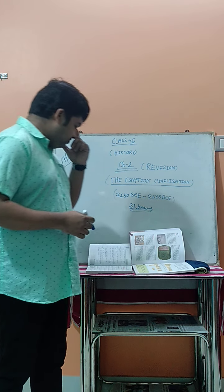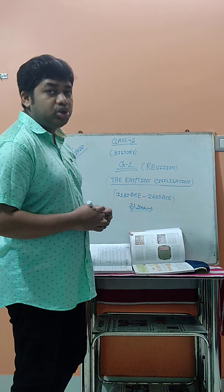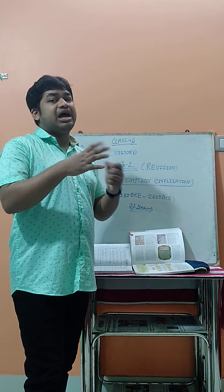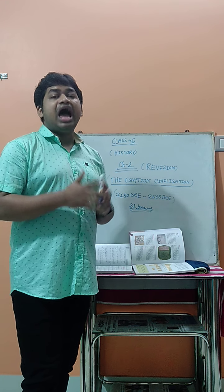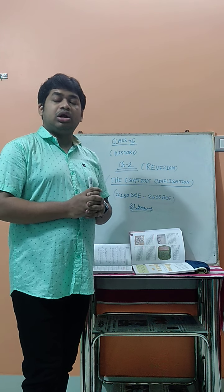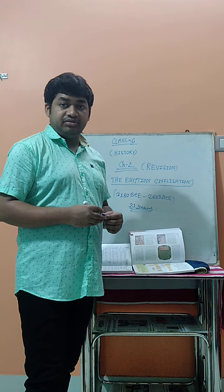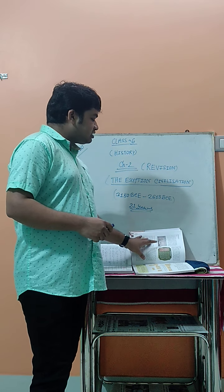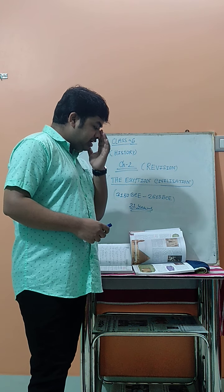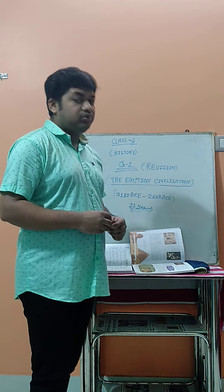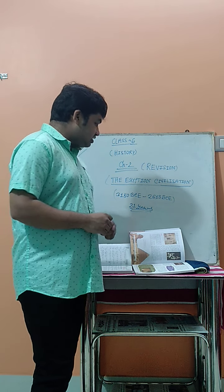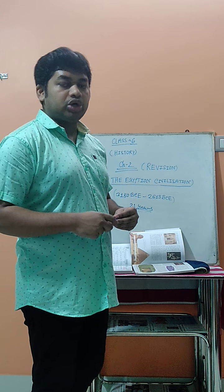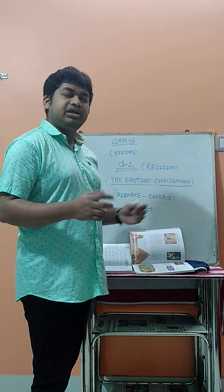Some important definitions: A pyramid is a triangular-type structure used as a tomb for the king or pharaoh. Mummification is the process in which dead bodies are wrapped in linen cloth — the wrapped dead bodies are called mummies. Hieroglyphics is the system of writing invented by the Egyptian people. A sarcophagus is a stone coffin in which the mummy was placed. These are all things you must learn, along with the exercise questions — they are very important for your exam.